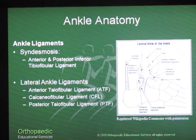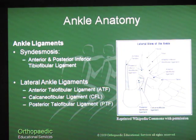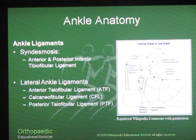A quick review of the ankle anatomy. The ankle is formed by the lateral malleolus, medial malleolus, and the talus. The medial and lateral malleolus are extensions of the distal fibula and tibia respectively. The syndesmosis is formed by a strong ligamentous structure that connects the distal tibia and fibula together. That ligament is called the anterior and posterior inferior tibiofibular ligaments.